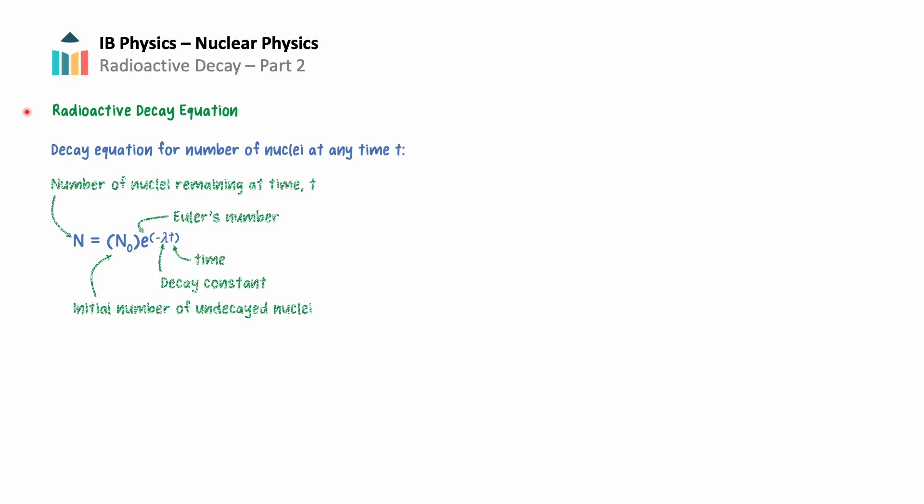In HL physics, we will look at the more complex decay equation, which allows us to determine the number of nuclei remaining at any time, not just at integer half-lives. The decay equation is n equals n-sub-zero times e to the power of negative lambda times t, where n is the quantity of undecayed radioactive nuclei at time t, n-sub-zero is the initial number of undecayed nuclei, e is Euler's number, lambda is the decay constant, and t is time.